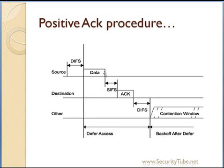In the timing diagram, the source is transmitting a data packet to the destination. After the end of the unicast data packet transmission, the destination has to wait for SIFS time — short interframe spacing time — and once this SIFS ends, without checking the busy/idle medium, it has to send the ACK. The ACK is sent by the destination to the source, and the acknowledgement frame will contain only the address of the source. That's how the source knows this ACK is coming from the destination of the last packet.